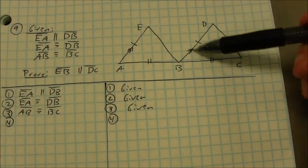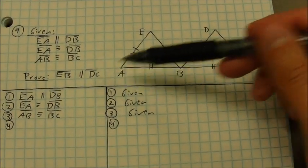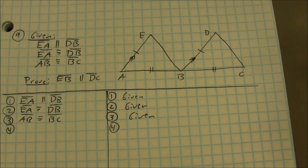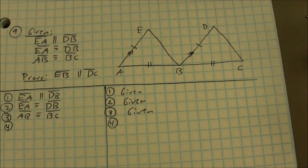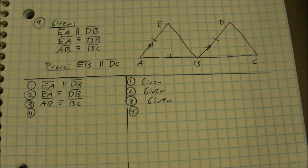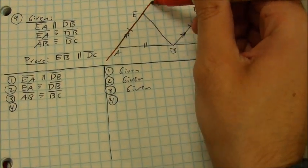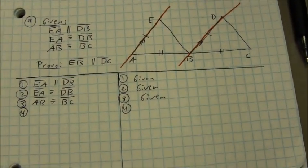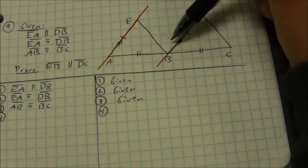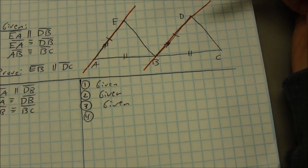This proof gives me a pair of parallel lines, two congruent segments, and another pair of congruent segments. I'm supposed to prove that EB and DC are also parallel. You prove lines parallel by showing angle pairs congruent — alternate interior angles, corresponding angles, or alternate exterior angles. I'm going to try to prove the triangles congruent, since the parallel lines can give me congruent angles. I have one transversal where I see a Z shape, but those angles don't seem useful at this point, so I look at a different transversal.